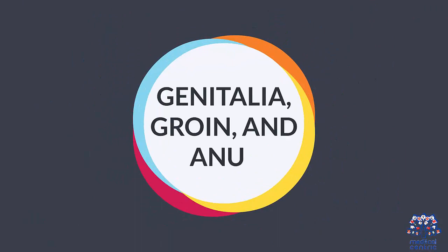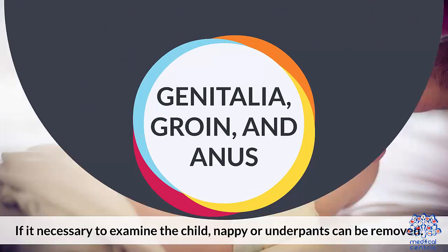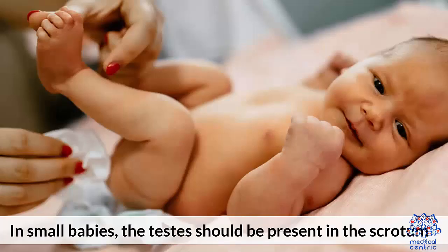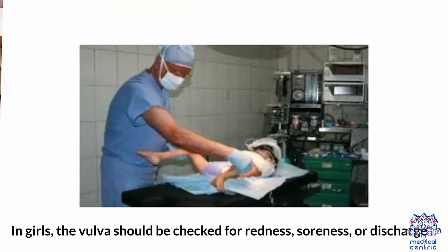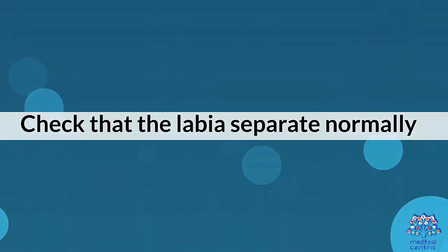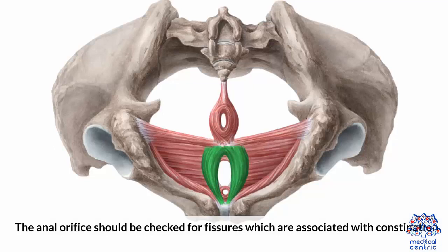For the genitalia, groin, and anus examination, nappy or underpants can be removed if necessary. In small babies, the testes should be present in the scrotum. In girls, the vulva should be checked for redness, soreness, or discharge, and the labia should be checked to ensure they separate normally. The anal orifice should be checked for fissures, which are associated with constipation.